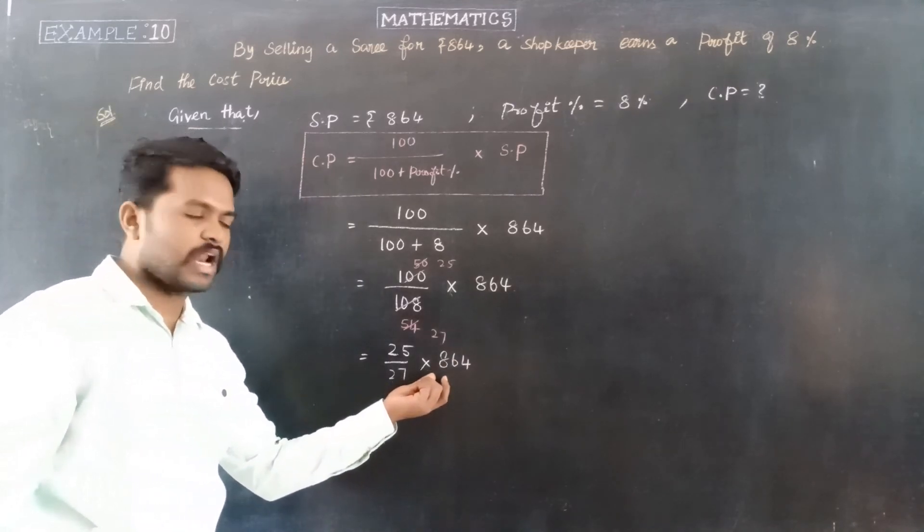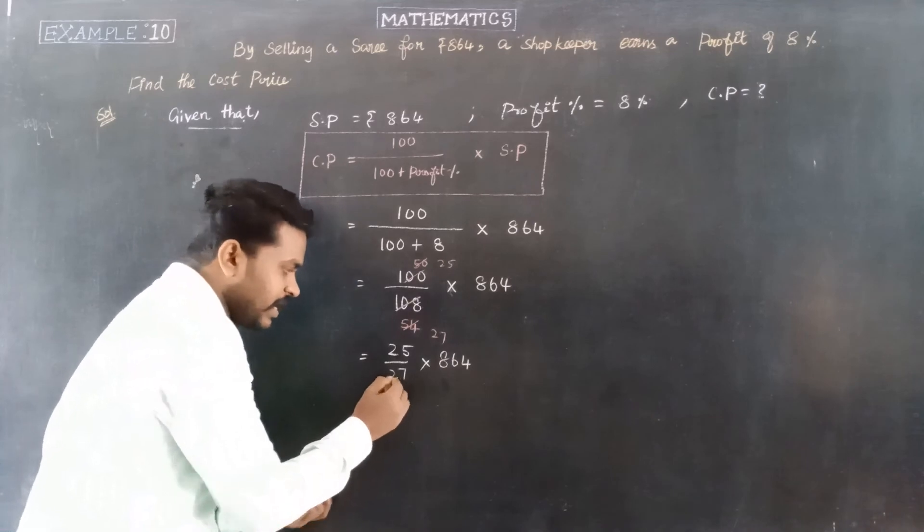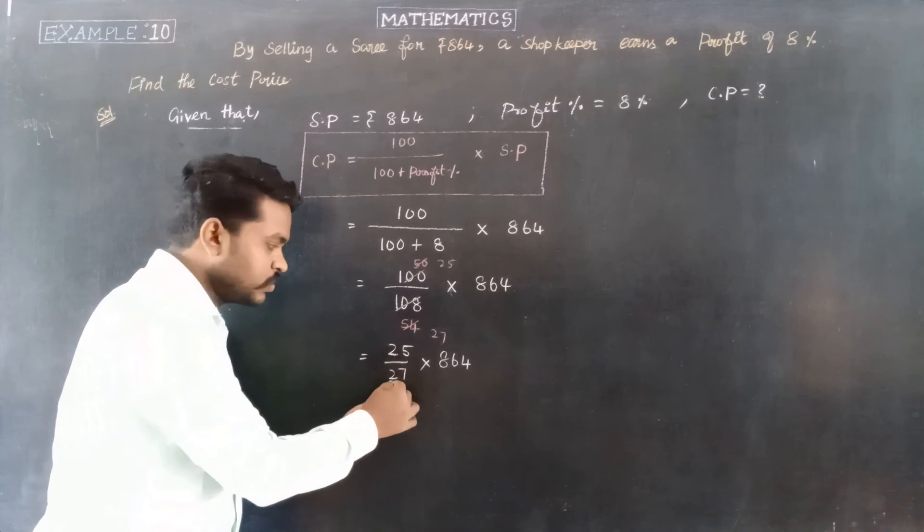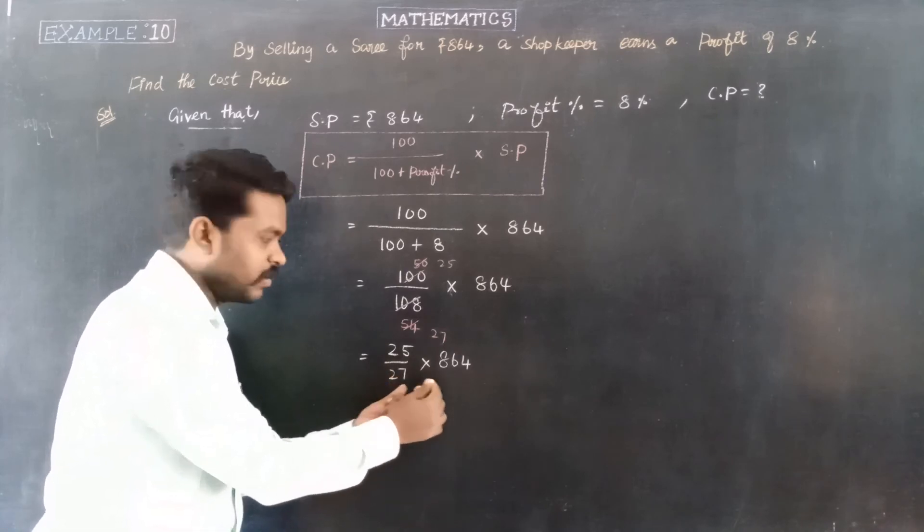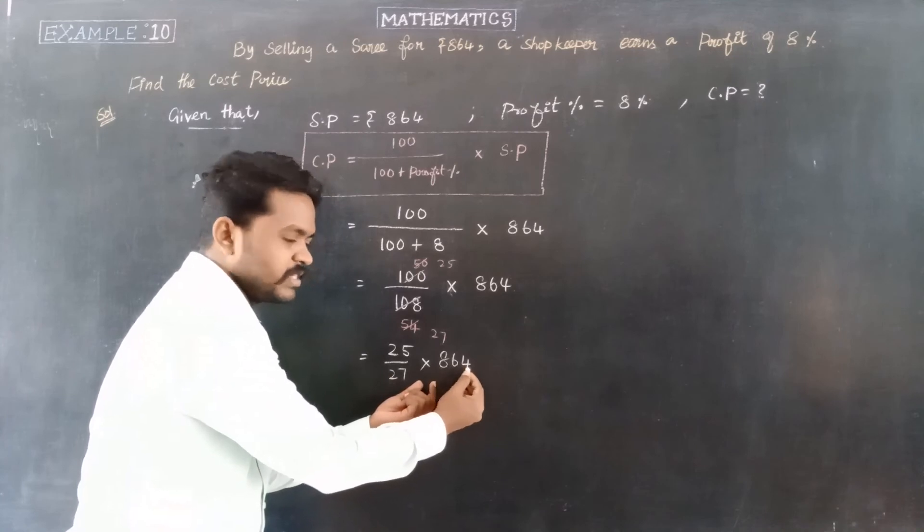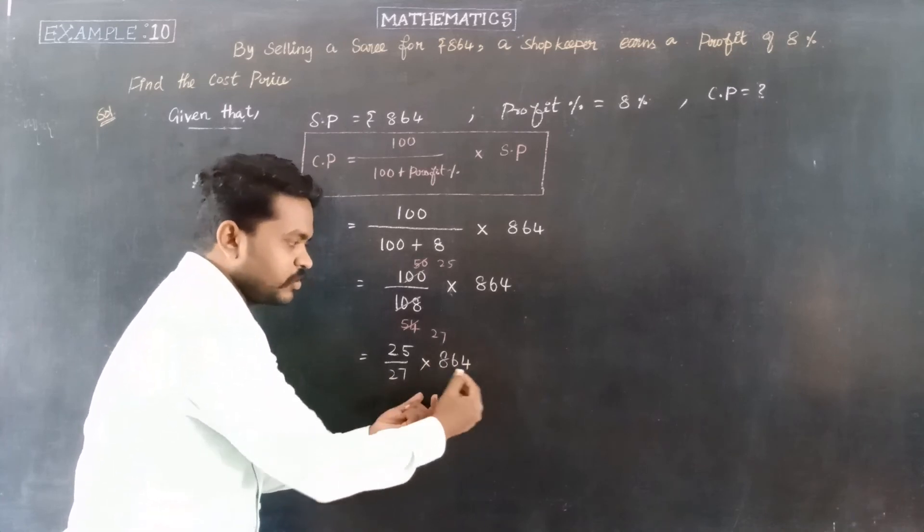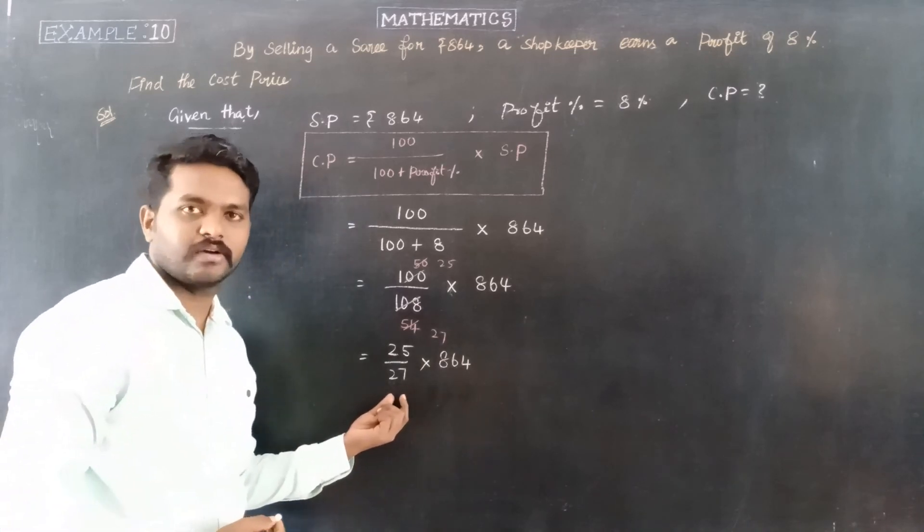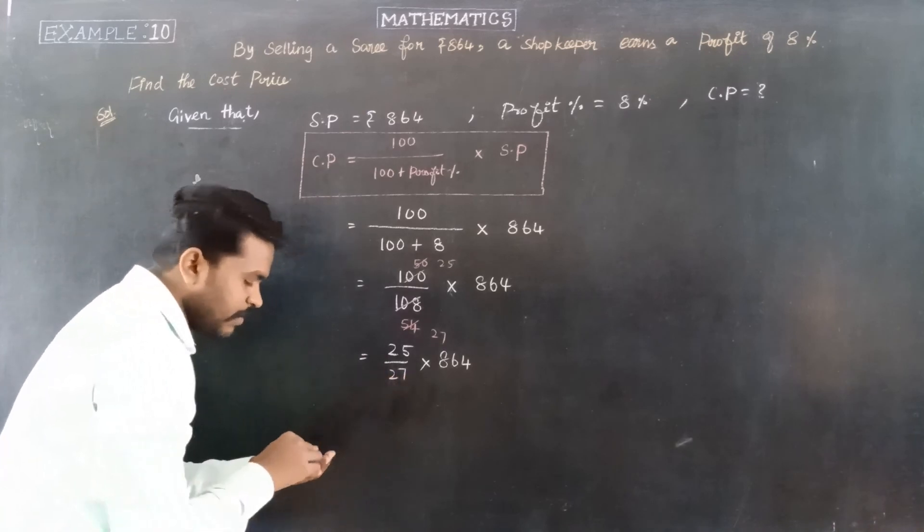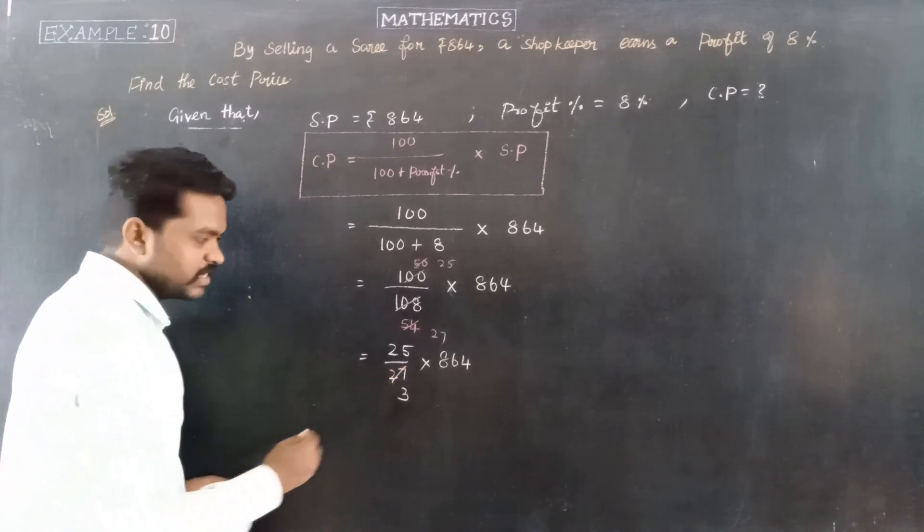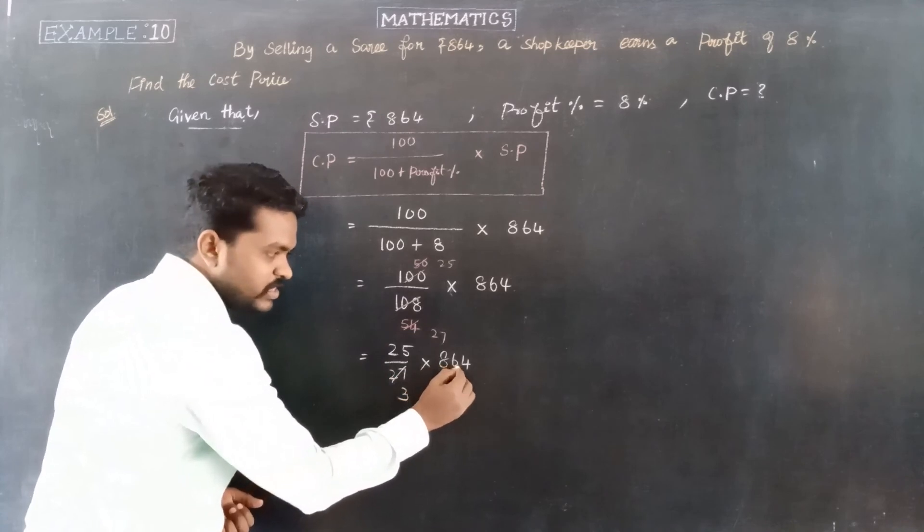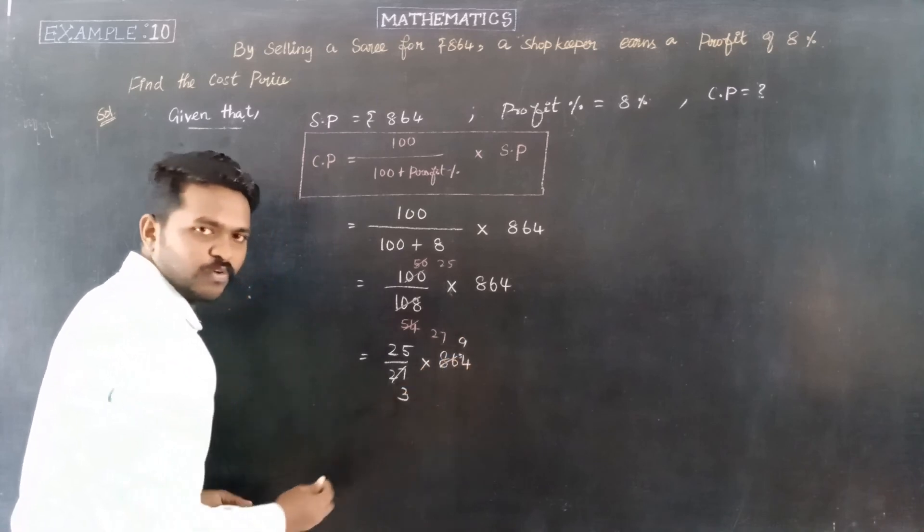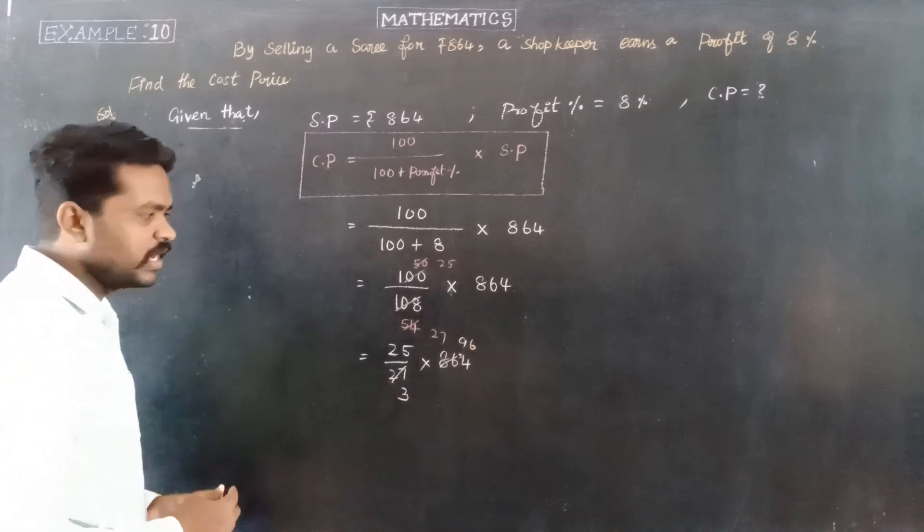864 is divisible by 9. The sum of digits 8 plus 6 plus 4 equals 18, which is divisible by 9, so the number is divisible by 9. 864 divided by 27 gives 32. So we get 25 times 32. 9 times 9 is 81, 27 times 2 is 54.